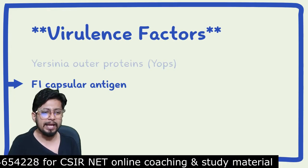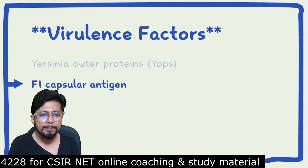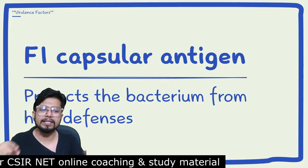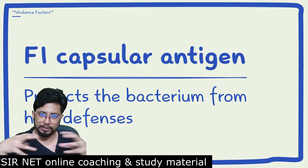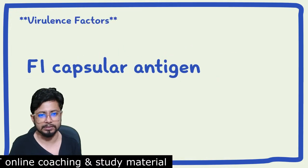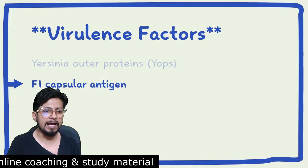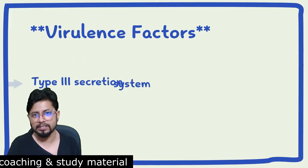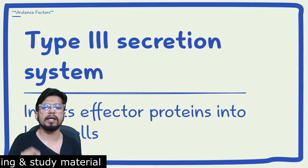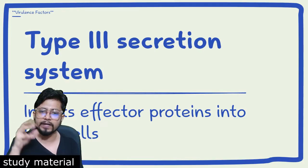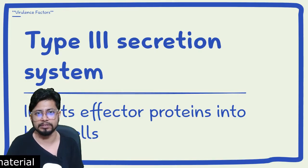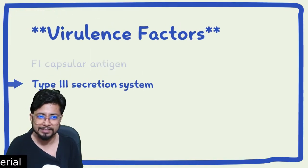The next virulence factor is the F1 capsular antigen, which protects the bacterium from host defenses and prevents phagocytosis. The third is the type 3 secretion system, which injects effector proteins inside the host cell to initiate pathogenic activities.